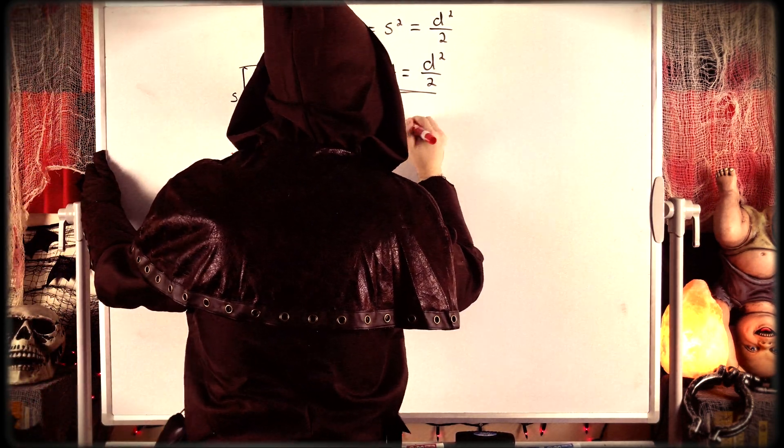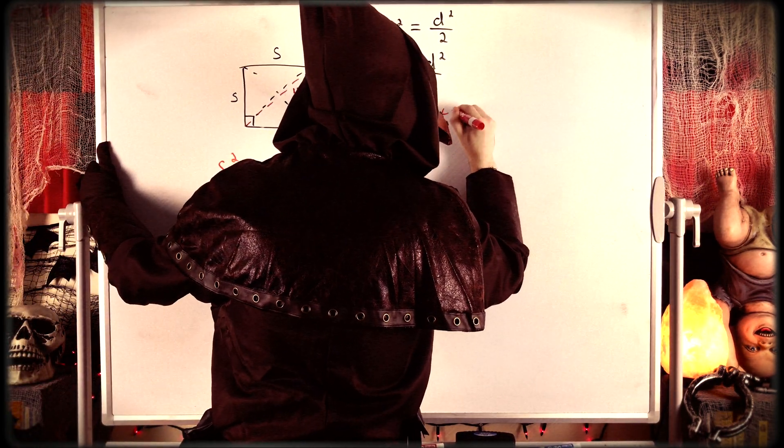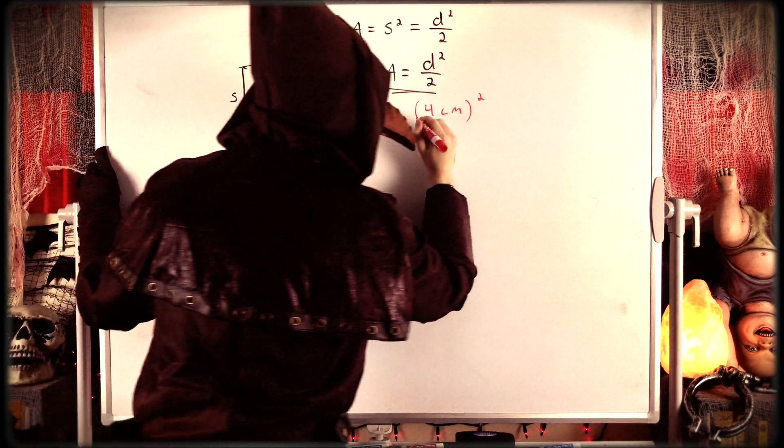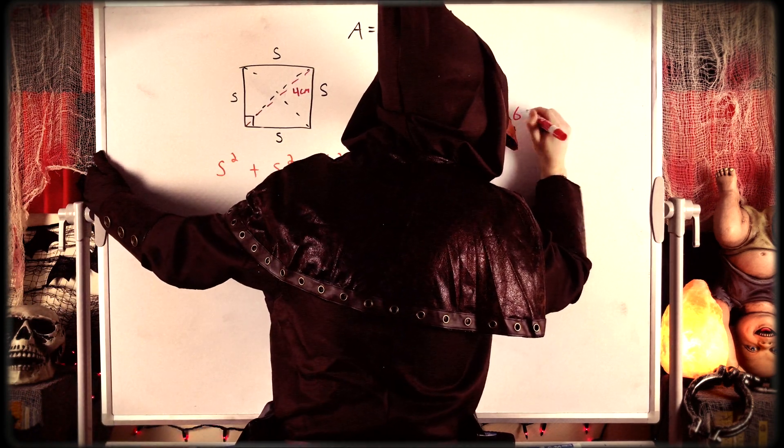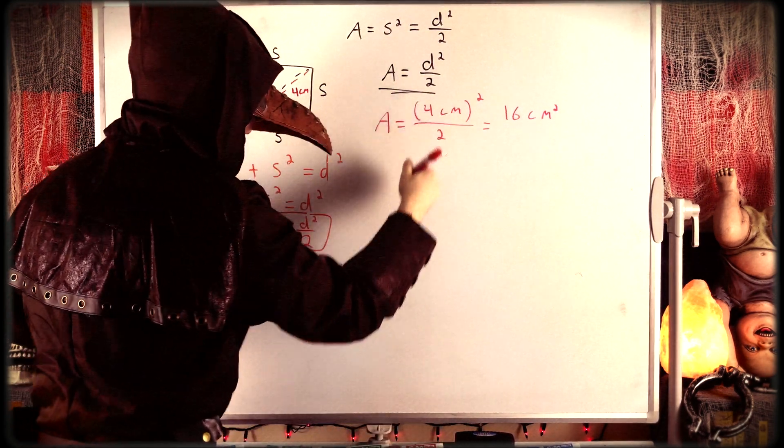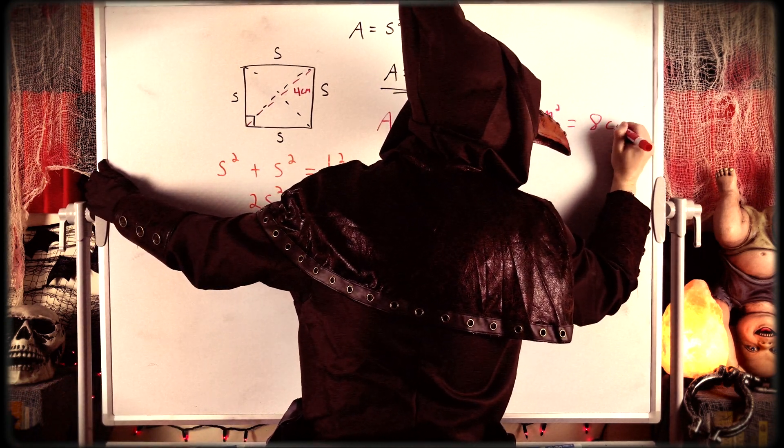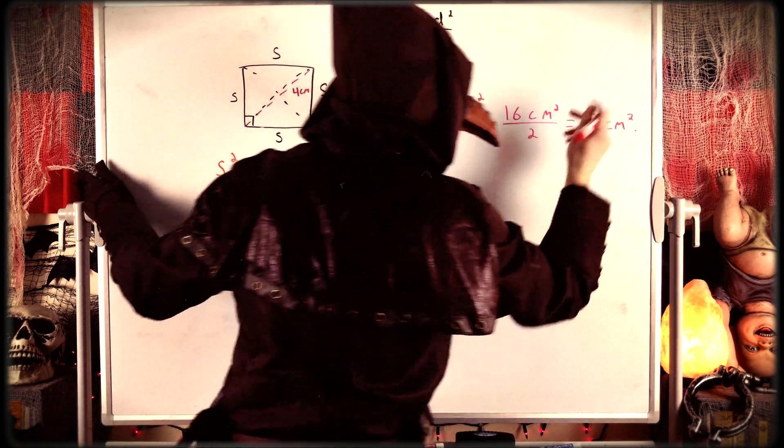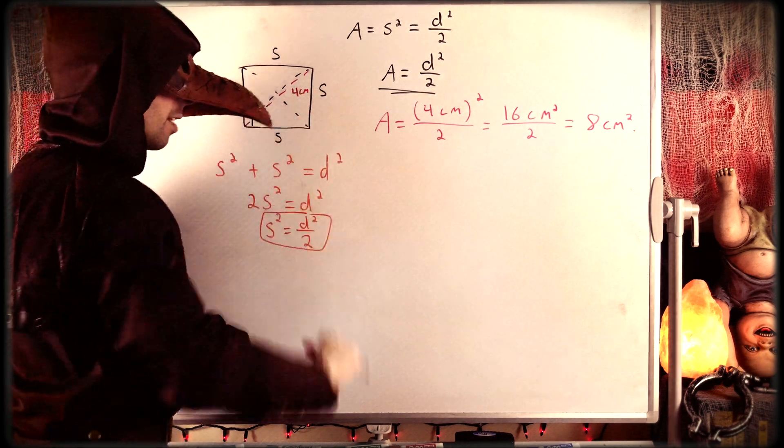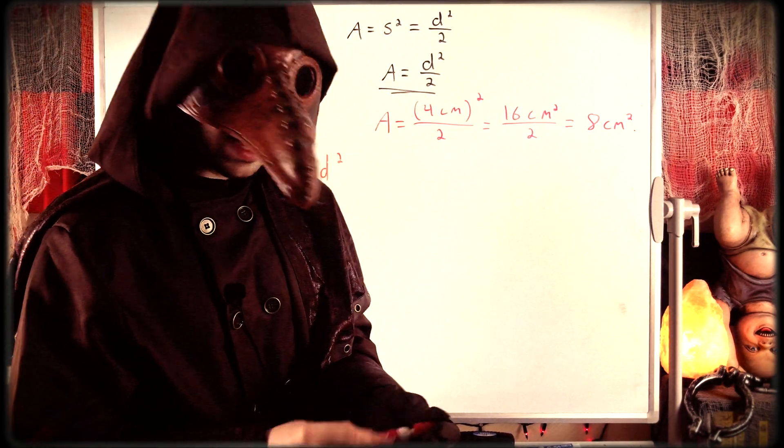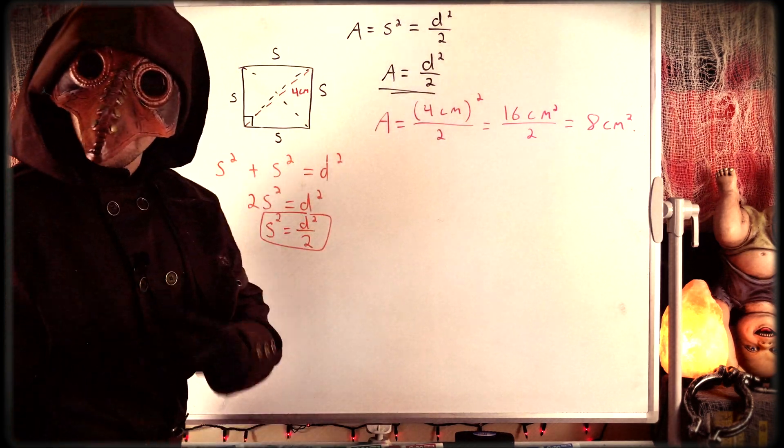So how do we find the area of the square given that diagonal of 4 centimeters? Well, we just have to square the diagonal. So 4 centimeters squared and then divide that by 2. 4 centimeters squared is 16 square centimeters. Remember that we have to square the unit too, and then divide that by 2, which is equal to 8 square centimeters. So the area of a square with a diagonal length of 4 centimeters is equal to 8 centimeters squared. You can find it by just squaring the diagonal and then dividing it by 2.